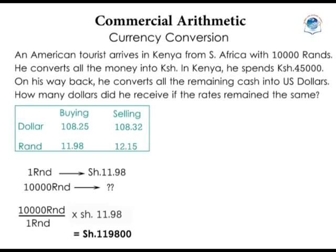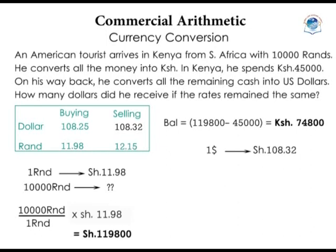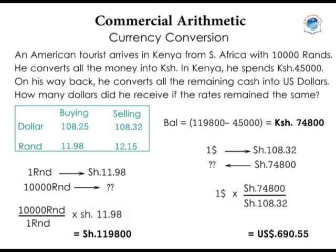While in Kenya, he spends 45,000 shillings. So he remains with 119,800 − 45,000 = 74,800 shillings. This is the amount he will convert to dollars. He wants to buy the dollars, which means the bank will sell him the dollars at 108.32 shillings per dollar. So: 1 dollar = 108.32 shillings, meaning 74,800 ÷ 108.32 = 690.55 dollars.